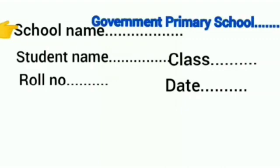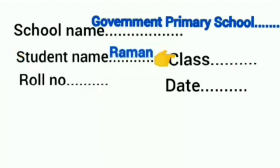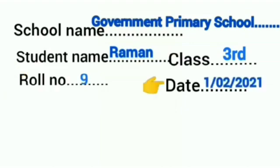In the second column, you will write your name. For class, all students will write third. Next, you will write your row number. Then you will write today's date.